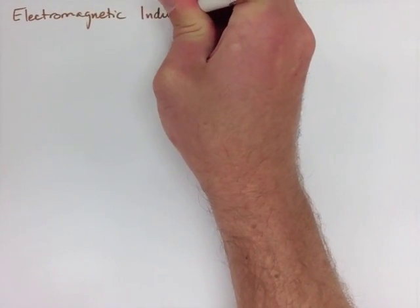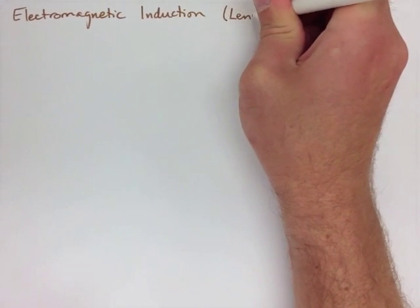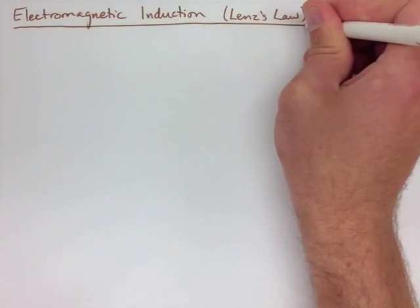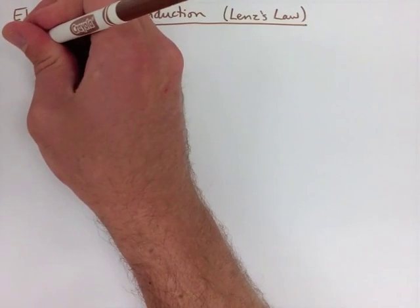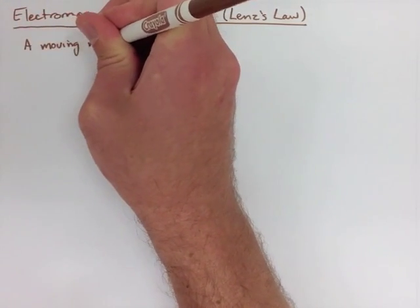What it's saying is a moving magnetic field will create a current in a solenoid such that the current is going to flow to oppose the motion of the magnet.